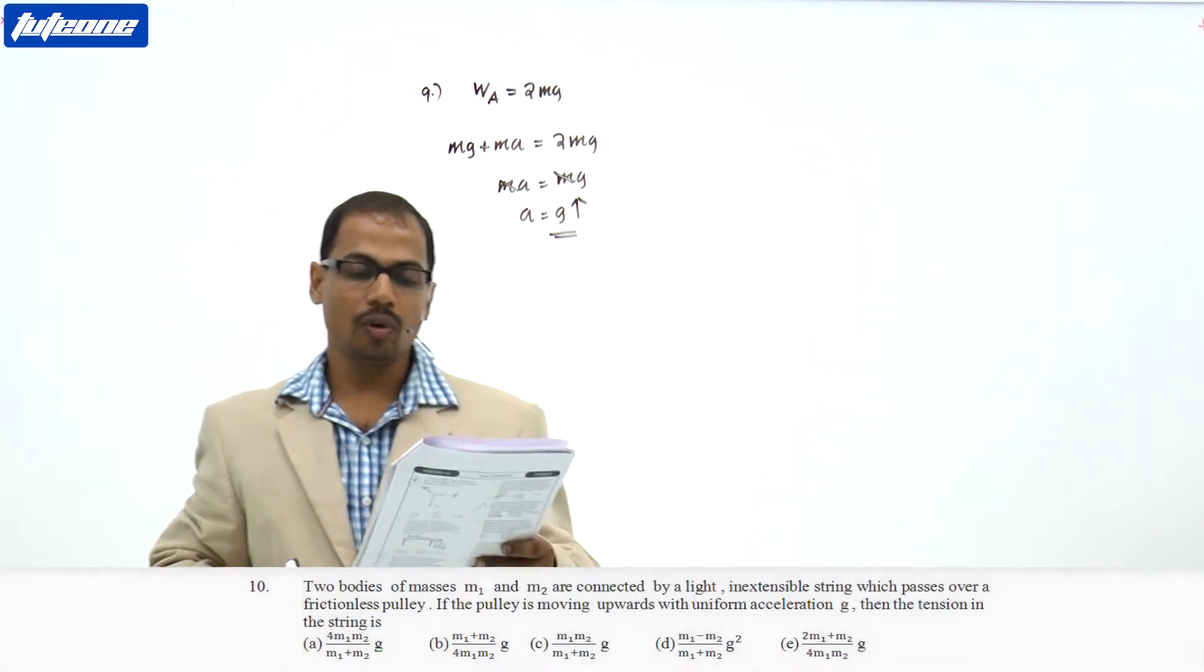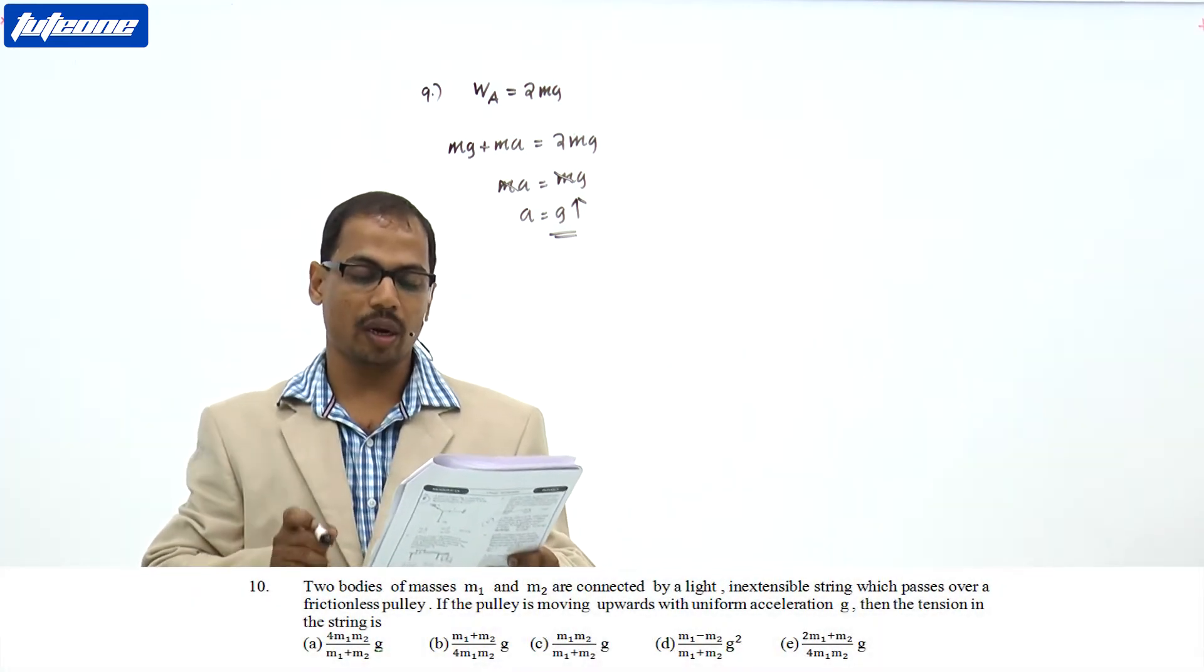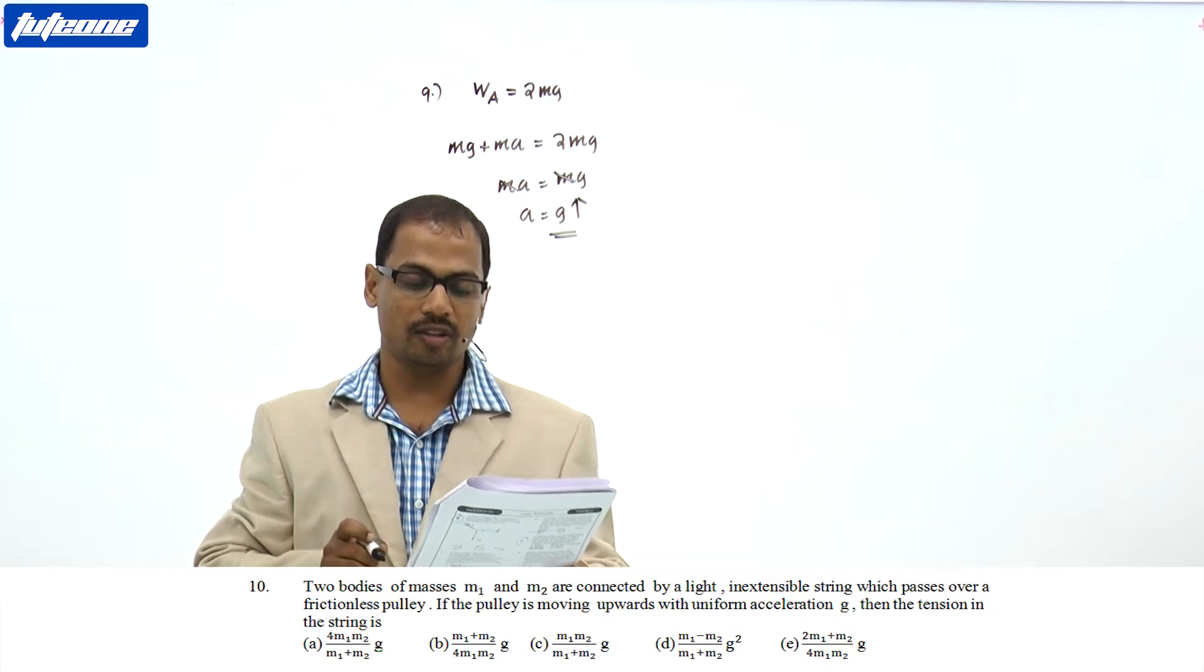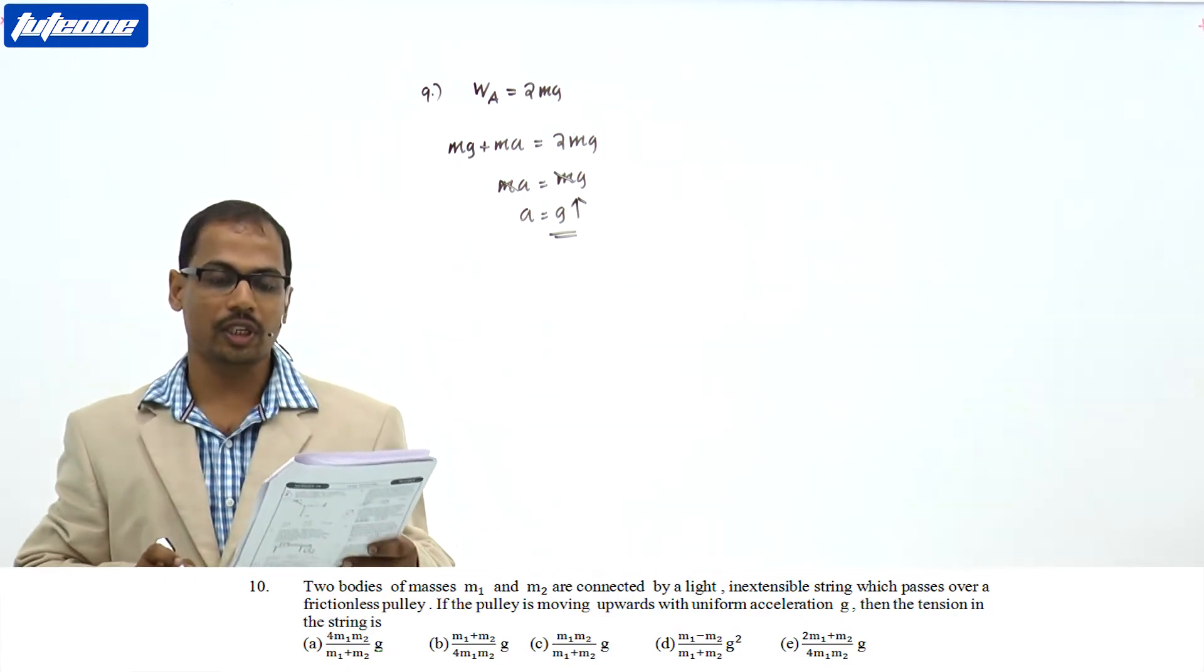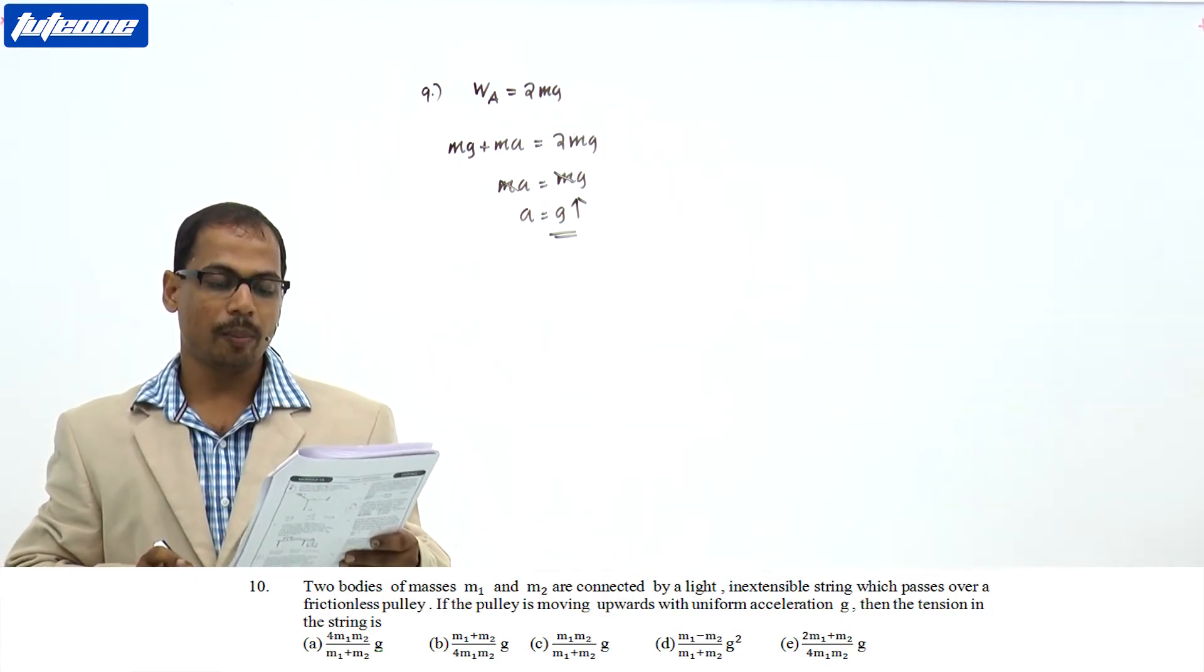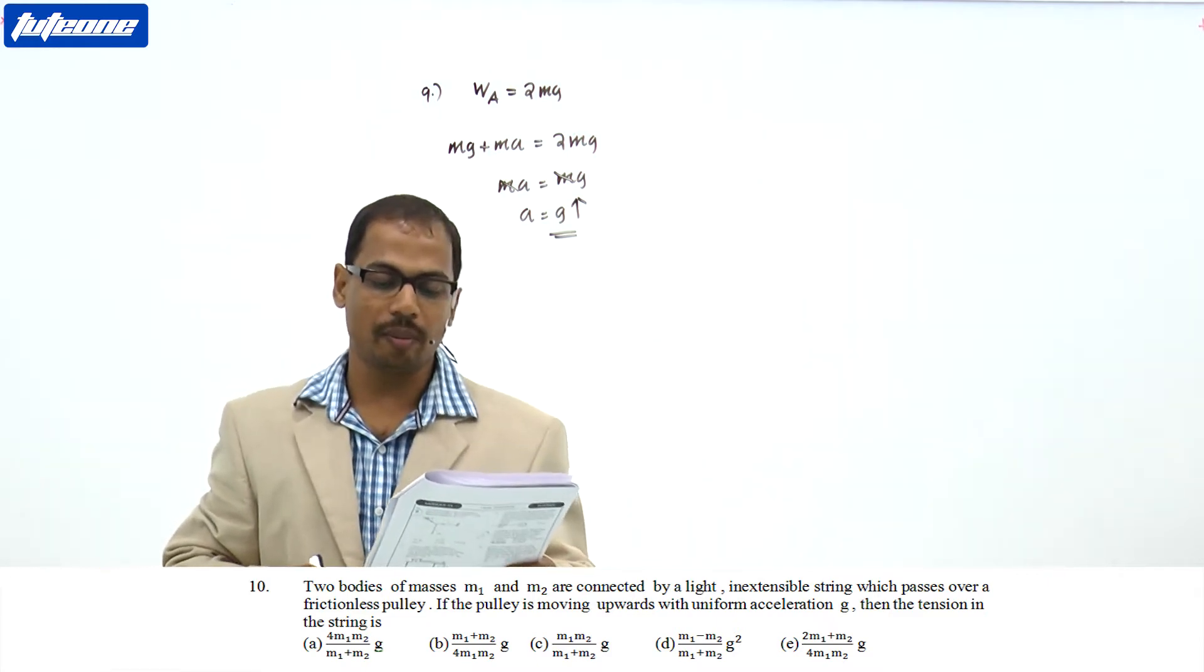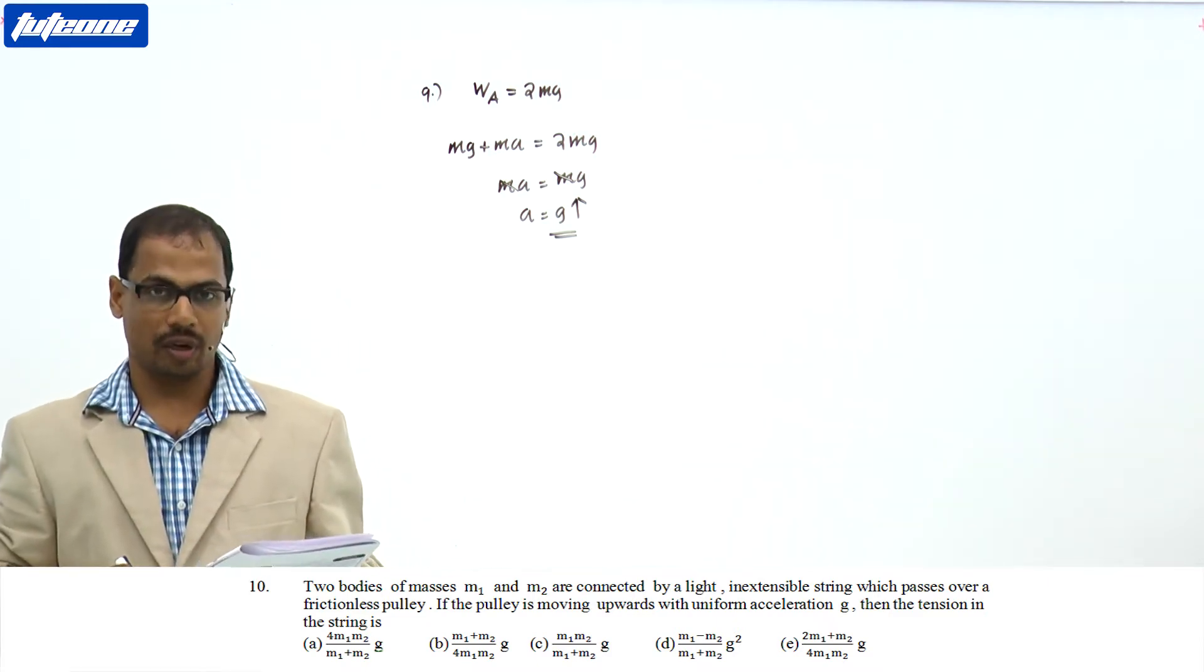Question number 10. Two bodies of mass M1 and M2 are connected by a light, inextensible string which passes over a frictionless pulley. If the pulley is moving upward with a uniform acceleration G, then tension in the string.